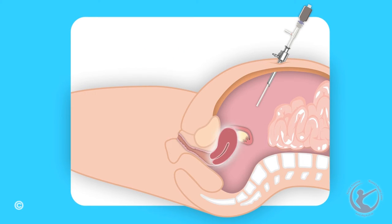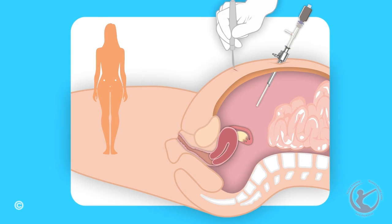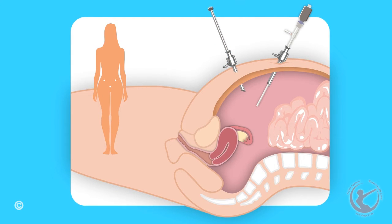I can see your womb, ovaries, fallopian tubes and other abdominal organs, including the bowel, liver, stomach, gallbladder, etc. One, two or three further small cuts are made in your abdomen to allow instruments into the abdomen.